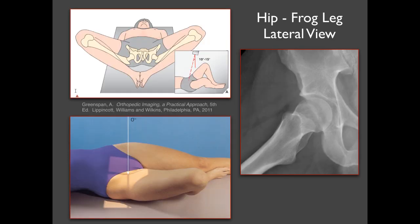In addition to the AP view, you can get a frog leg lateral view. You can see why it's called that — this person looks like a frog laying down. The pelvis may be rotated a little bit, but the key thing is that the legs are splayed out like a frog. That gives a different rotation, a different projection of the femoral head and neck.